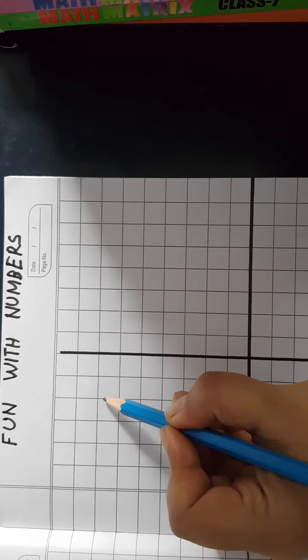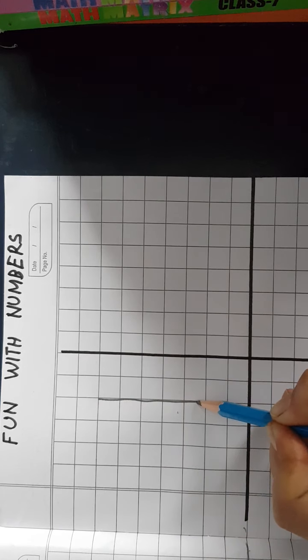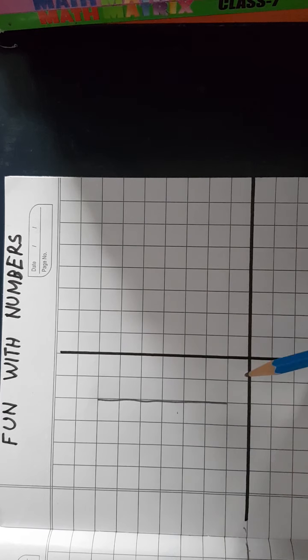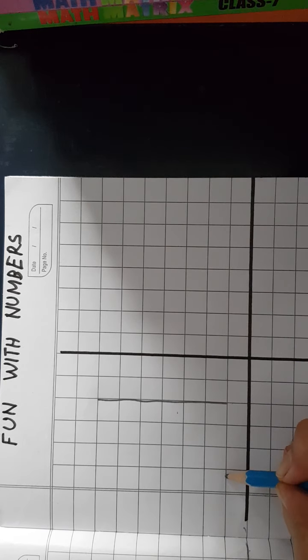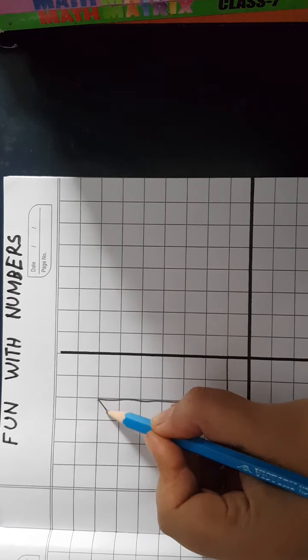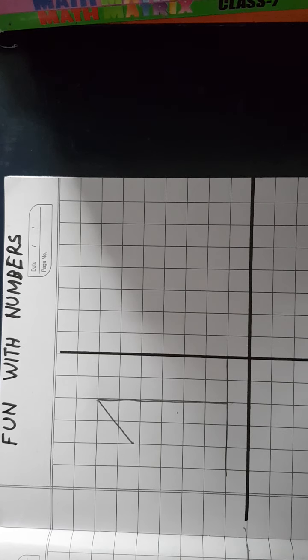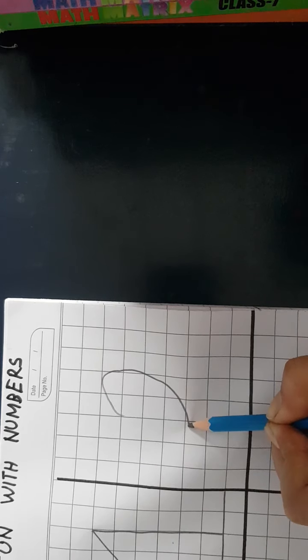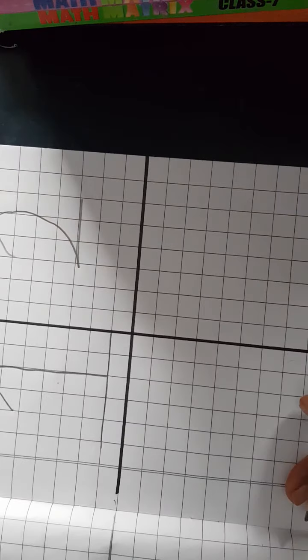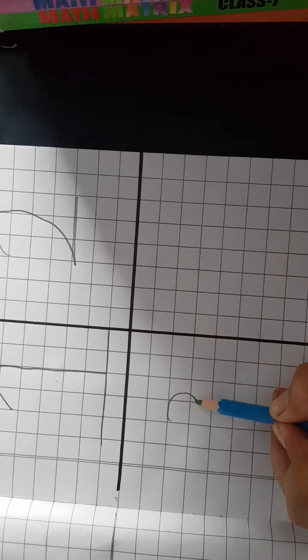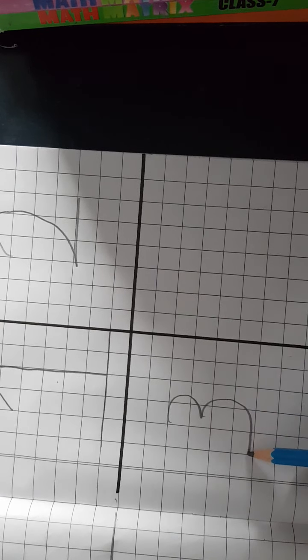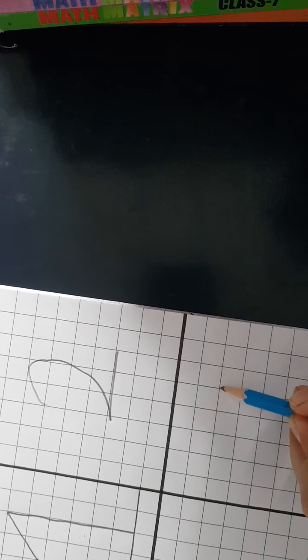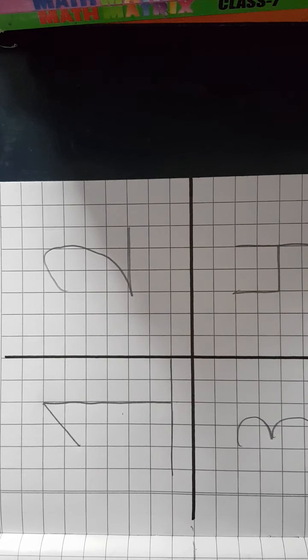In the very first section, I am going to write 1. This is number 1. This is a standing line, but we need to write it big. Now, I am going to write number 2. Then we will write number 3. After that we will write number 4. So this way we have written 4 numbers: 1, 2, 3, and 4.